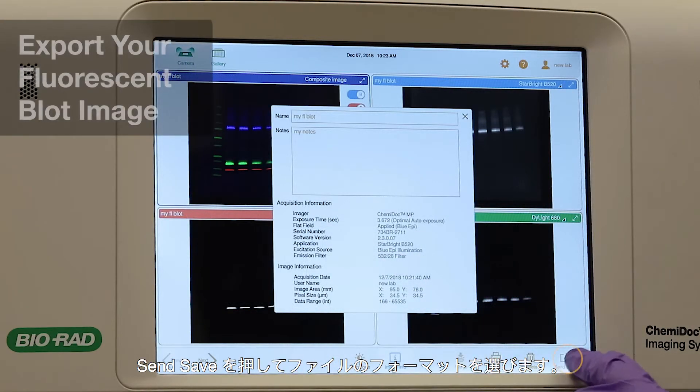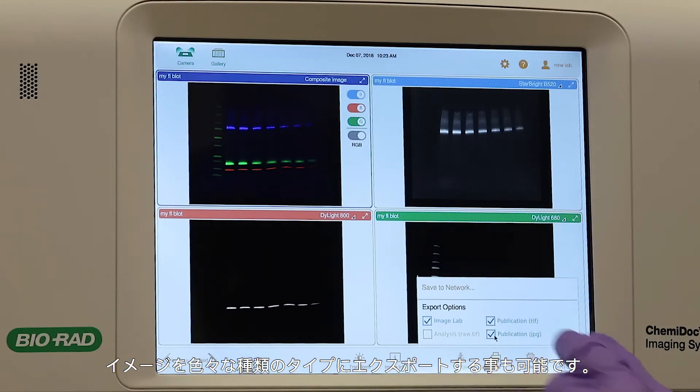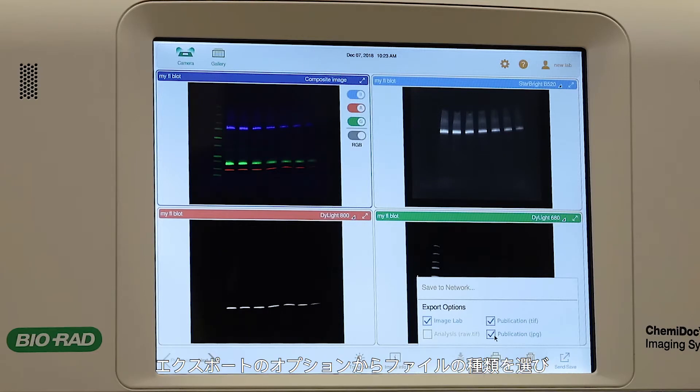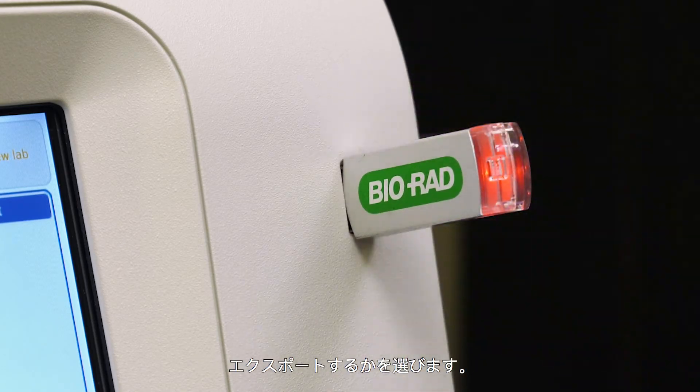Tap the Send Save icon to select the file format. You can also export images in multiple file types. Under Export Options, tap a file type and the destination, either saving to a USB drive or to a network.